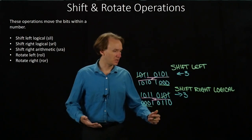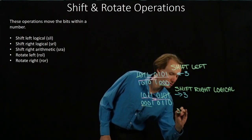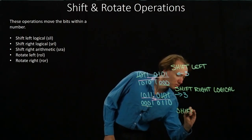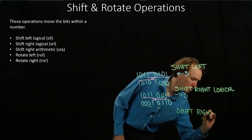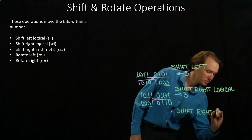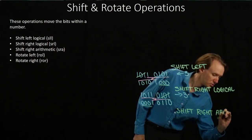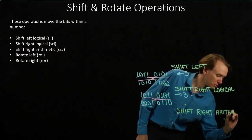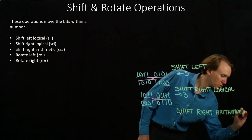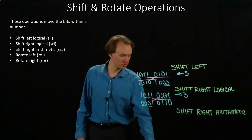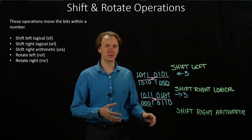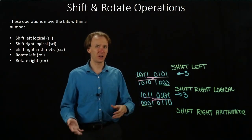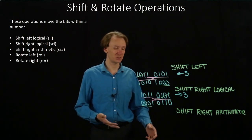So instead, I could have a shift right arithmetic instruction. This will ensure whatever the results of my number are, that they're still relatively comparable to what I had to begin with. The sign will stay the same.